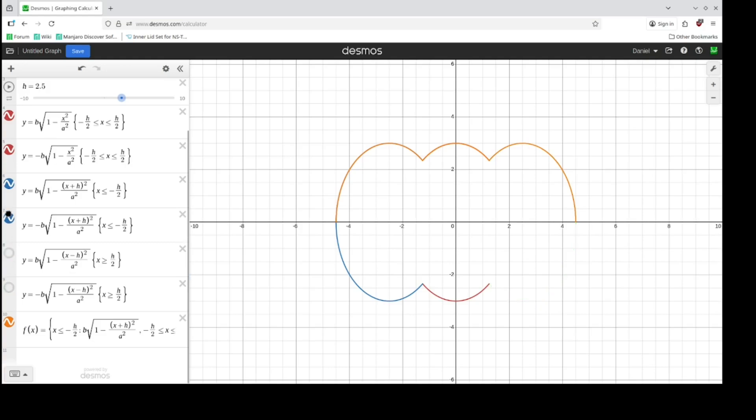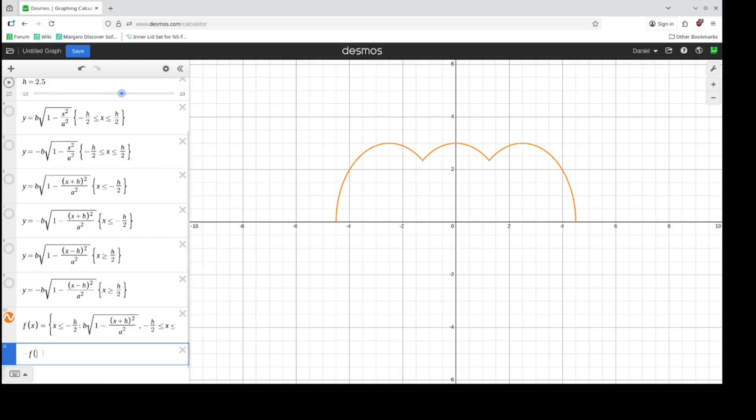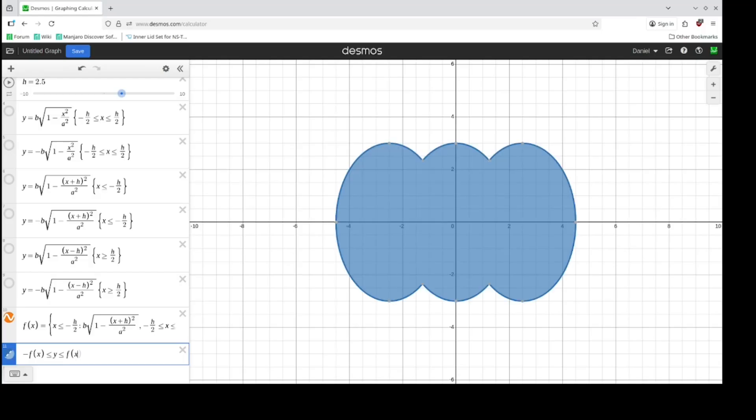So now that we have one f of x defined, we just simply need to call minus f of x to get the bottom half. We then fill this in. Now that we know where's our bottom and where's our top, we can say minus f of x is less than or equal to y is less than or equal to f of x.